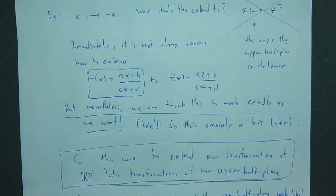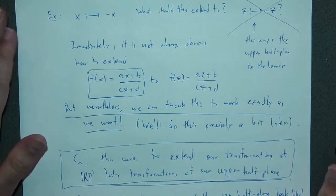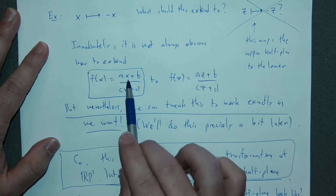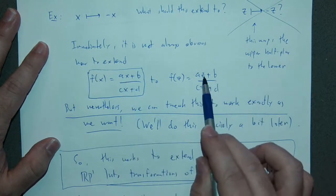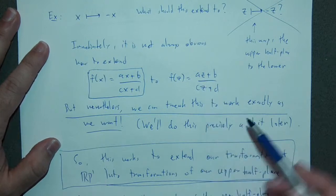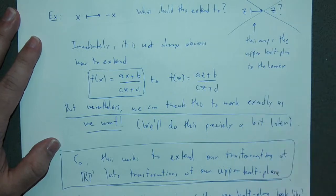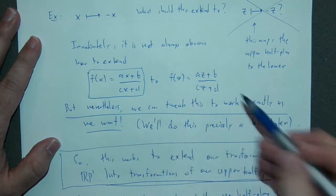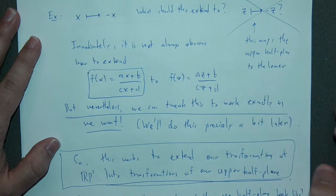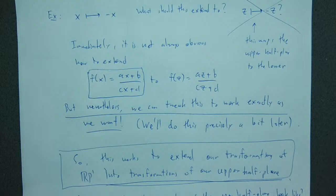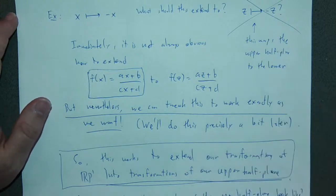By extending this we get a fuller picture. The simplest idea is to just replace our real variable x with a complex number z, viewing a point in the plane as a complex number and replacing this variable with a complex number. The problem is that when we try to do this extension, there are some hiccups we have to overcome.